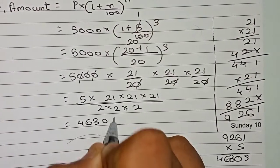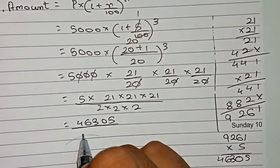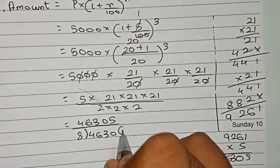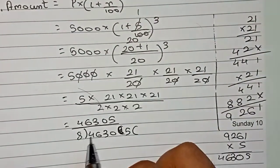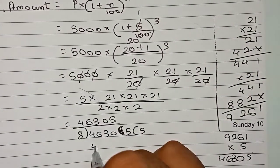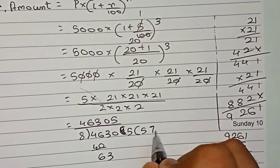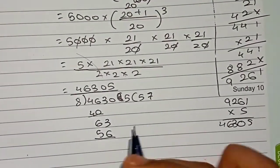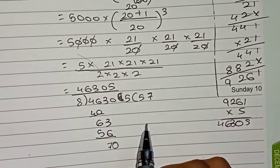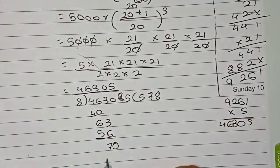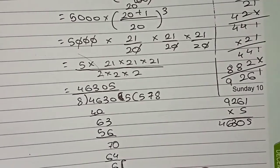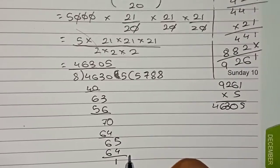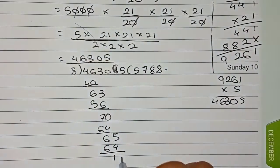Now we divide 46305 by 8. 8 into 46 gives 5 remainder 6; 8 into 63 gives 7 remainder 7; 8 into 70 gives 8 remainder 6; placing a decimal point, 8 into 60 gives 7 remainder 4; continuing the division.